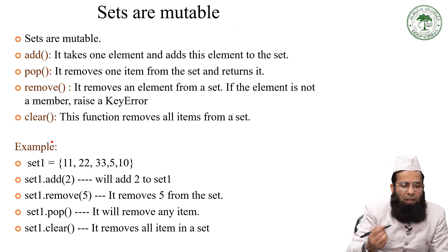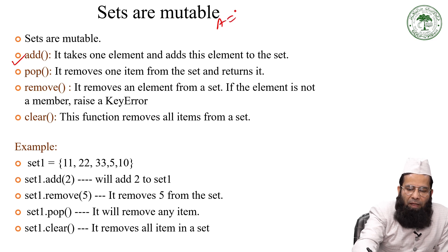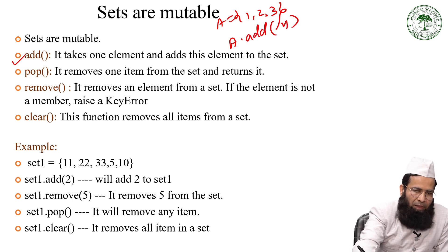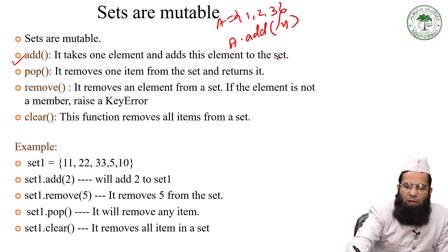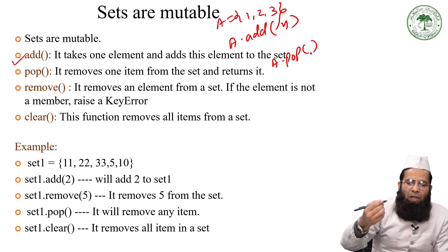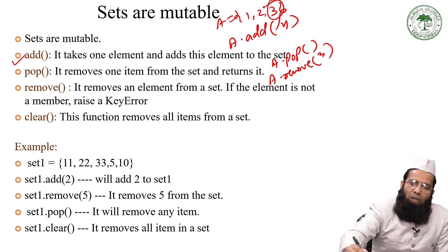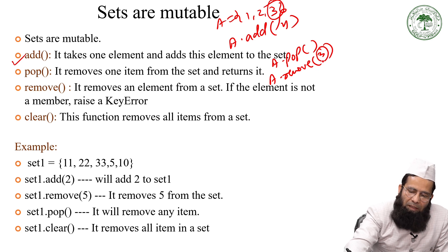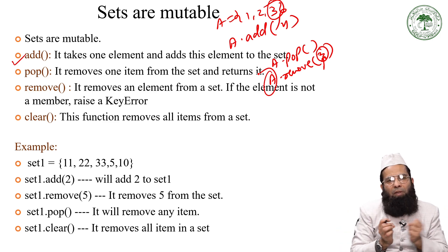Sets are mutable. You can use the add() function to add an element: for example, if a = {1, 2, 3}, writing a.add(4) will add 4 to the set. Similarly, you can use a.pop() to remove an element, or a.remove(3) to remove the specific element 3. Note that 3 here is the element value, not an index, since indexing is not applicable in sets. In this way you can expand or shrink your set.